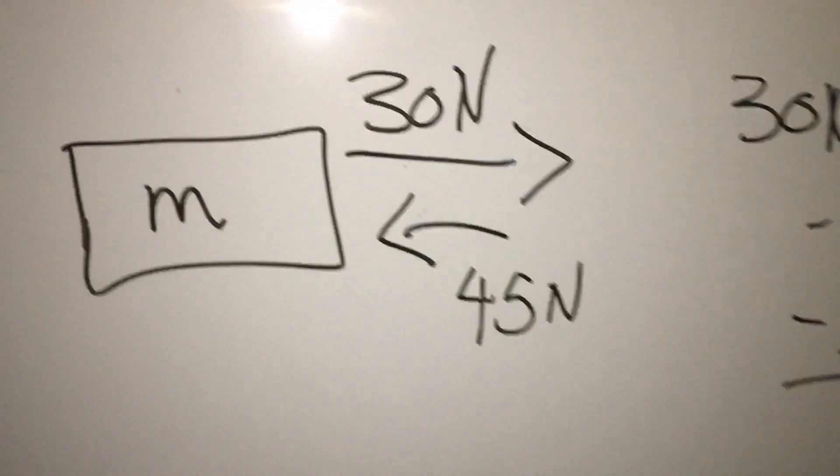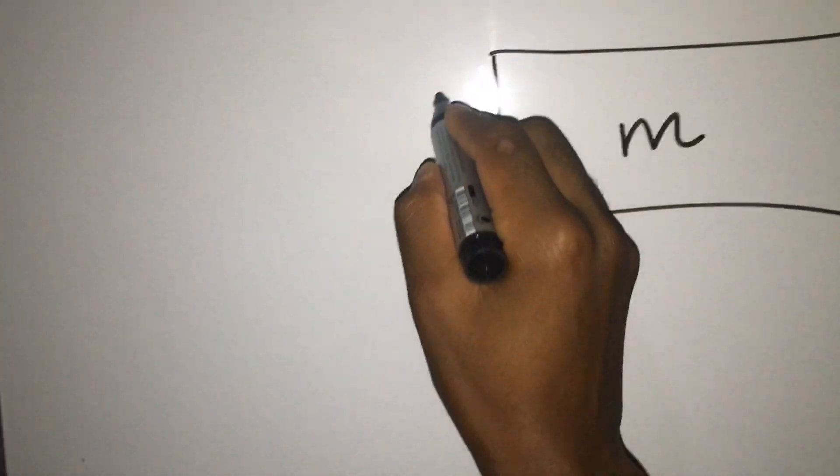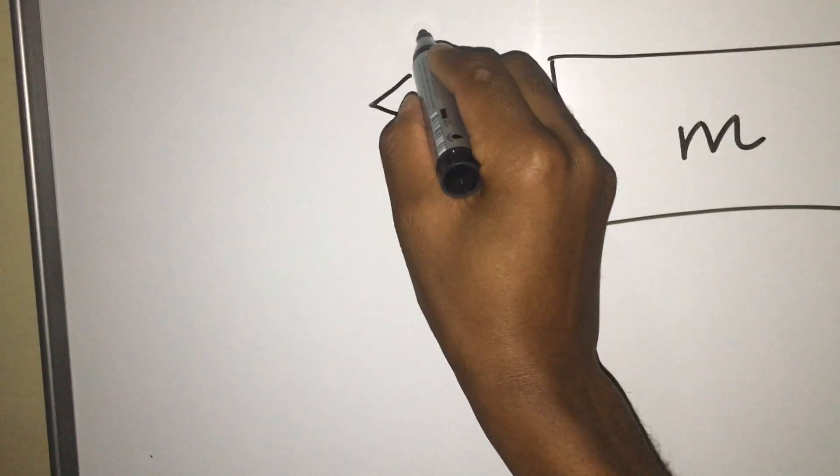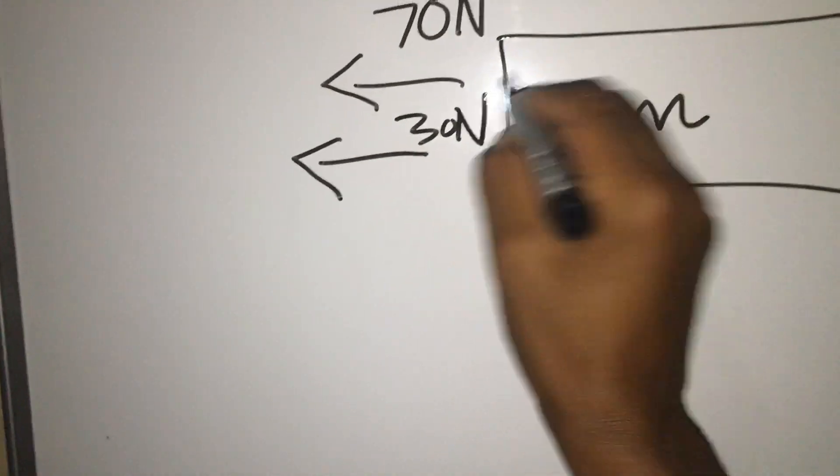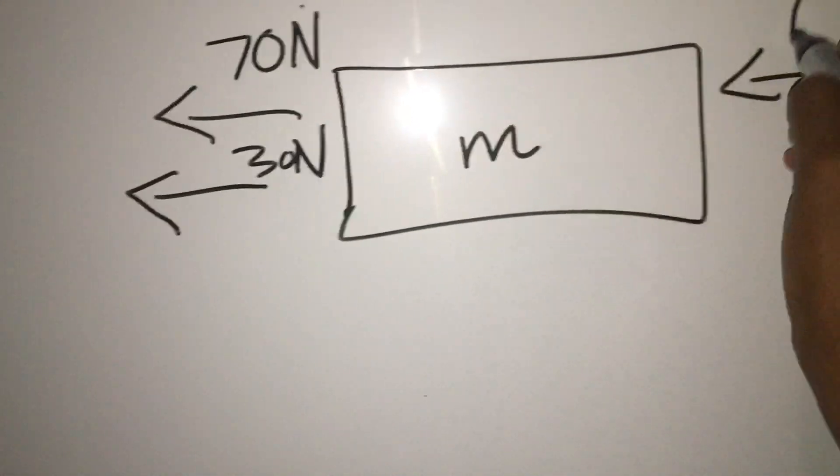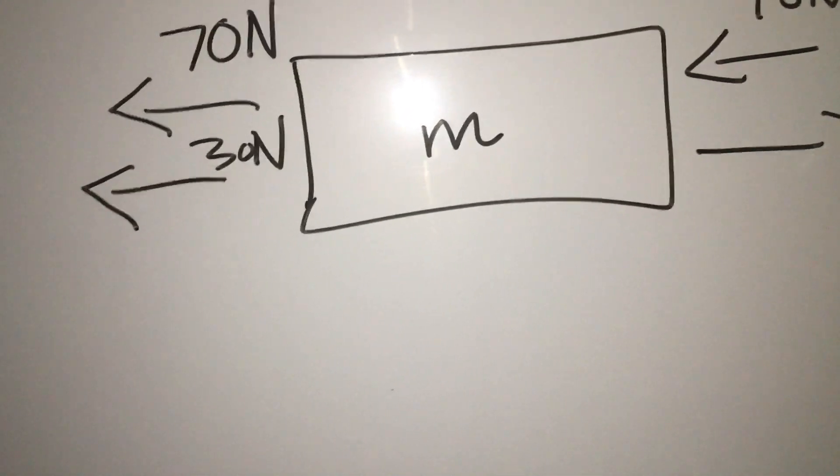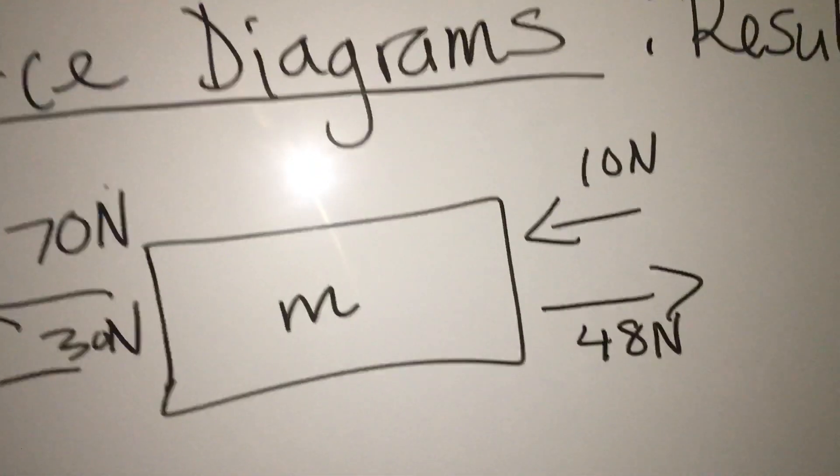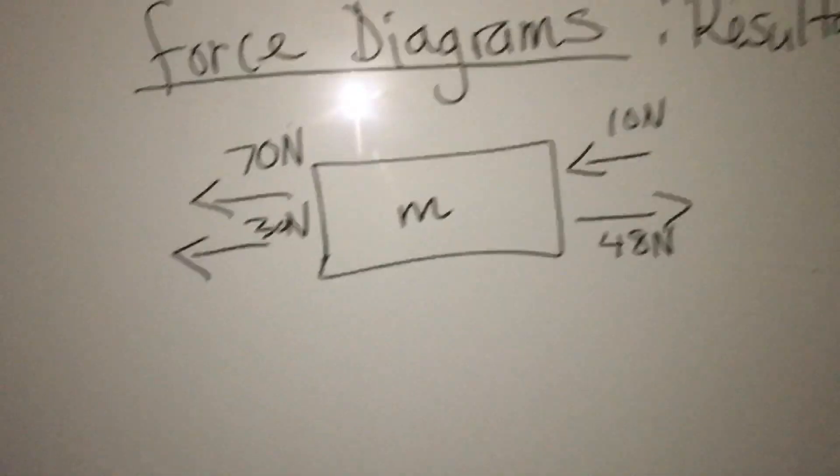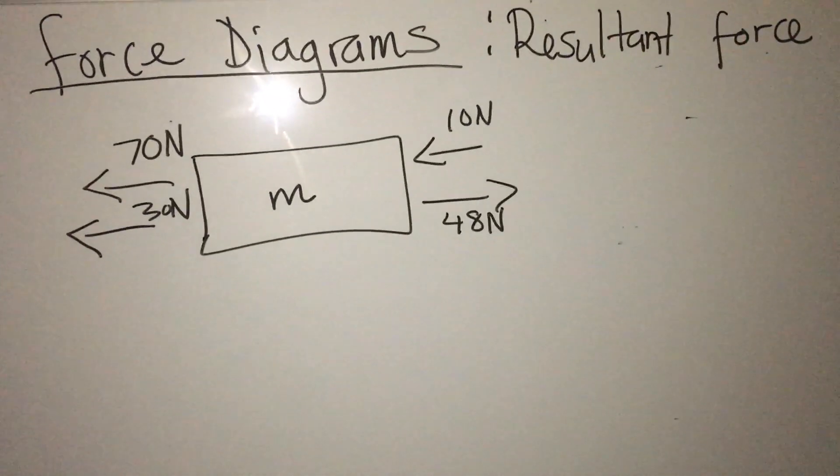Can you see? Okay, I would like us to do this. Please find the resultant force here. So 17 newtons, 13 newtons, 10 newtons, 8 newtons. Let's find the resultant force of that diagram.